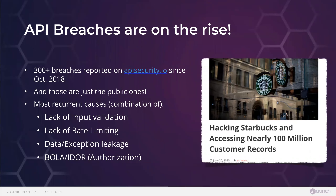It will be no surprise to any of you that API breaches are really on the rise. We've been able every single week for the past two years to report breaches on APIsecure.io. Looking at why this is happening, it's mostly four things — usually a combination: lack of input validation, not enough rate limiting or badly configured rate limiting, data and exceptional leakage, and authentication and authorization issues.